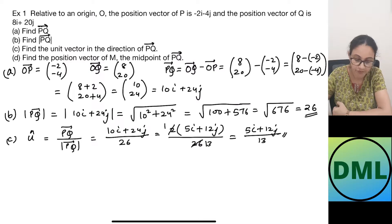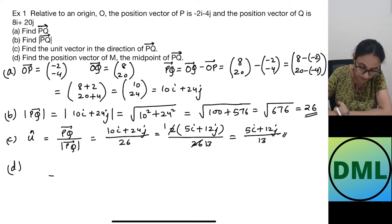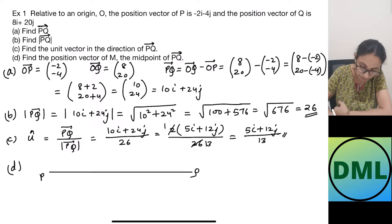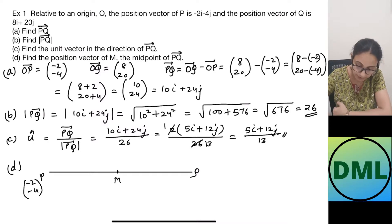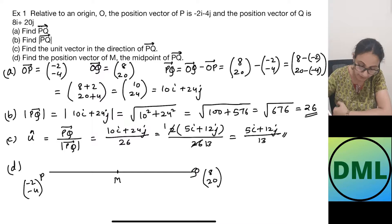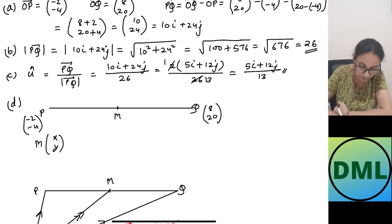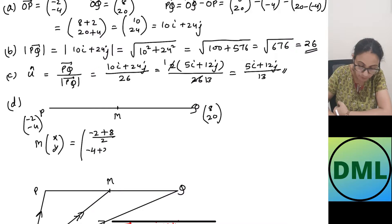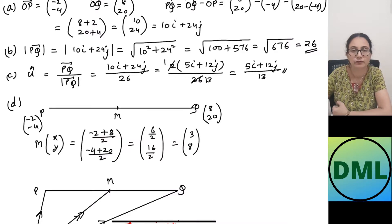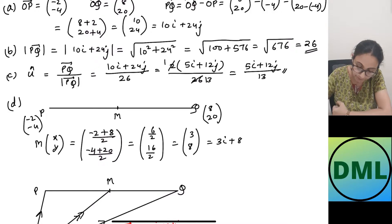Now we need to find the position vector of M where M is the midpoint. Vector P is (−2, −4) and vector Q is (8, 20). Applying the midpoint formula directly, the midpoint M has coordinates (−2+8)/2 and (−4+20)/2. Solving: that is 6/2 and 16/2, which gives (3, 8). Written in i and j form, this is 3i plus 8j. This is the first method of finding the midpoint.